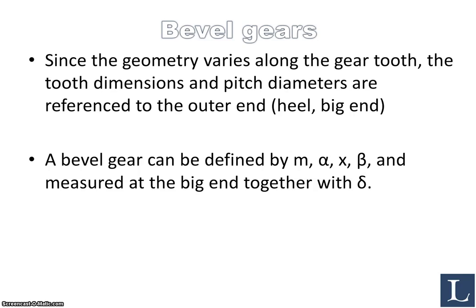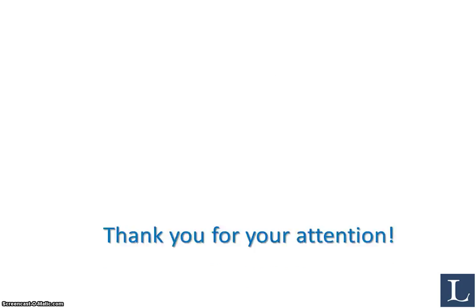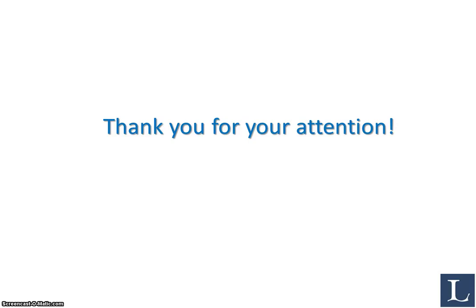Since the geometry also varies along the gear tooth, the tooth dimensions and pitch diameters are referenced to the outer end — also known as the heel or big end of the gear. A bevel gear can be defined by the modulus, the pressure angle, the correction factor, beta relating to spiral gears, measured at the big end together with the pitch angle. Thank you for your attention in this part of the lecture, and I hope you will enjoy the next part dealing with more bevel gears.